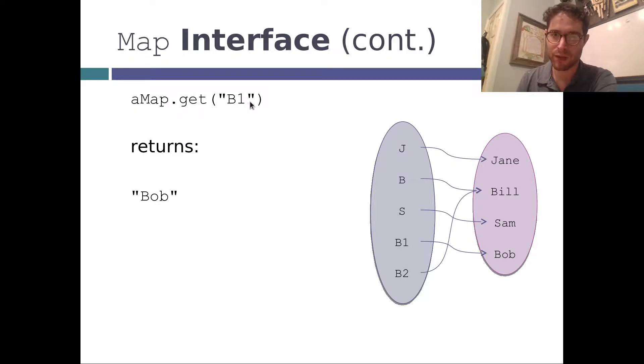So aMap.get(B1) will return Bob. Getting the value associated with B1, that's Bob, so we'll return Bob. If we get Bill, we ask for the value associated with Bill. Well, we check this set, and it says there's no Bill there. So return null. Bill's a value, not a key, so you can't get that.